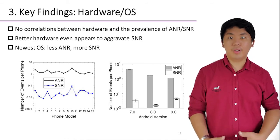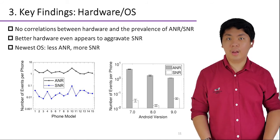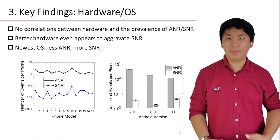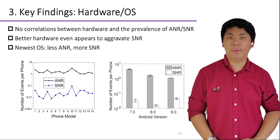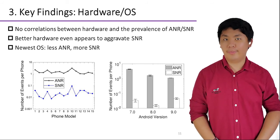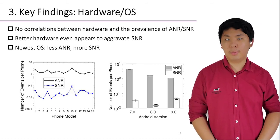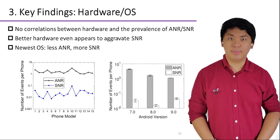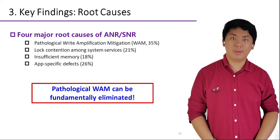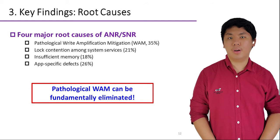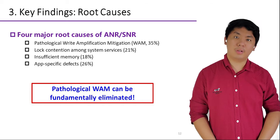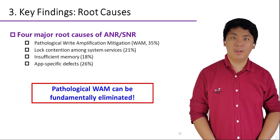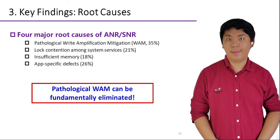For OS versions, the newest system has less ANR but more SNR, while Android 8.0 has the best system-level responsiveness, probably owing to its moderate performance as well as sound stability and robustness. With automatic root cause analysis, we locate four major root causes and surprisingly find that the largest root cause — which we call Pathological Write Amplification Mitigation, or WAM, in Android — can in fact be fundamentally eliminated.